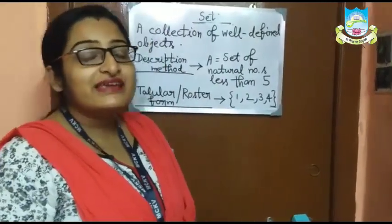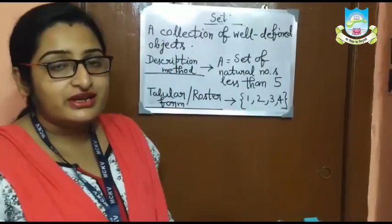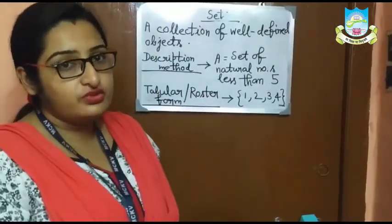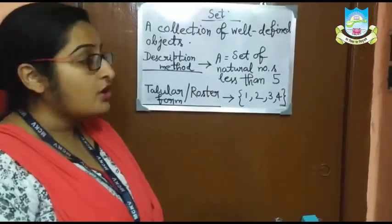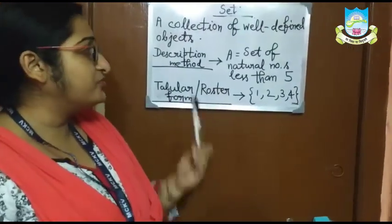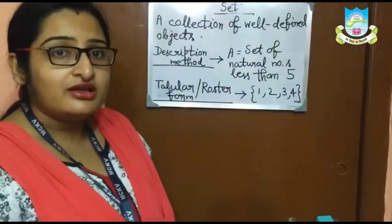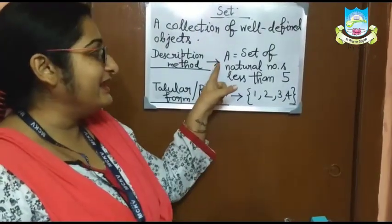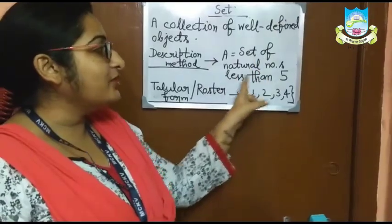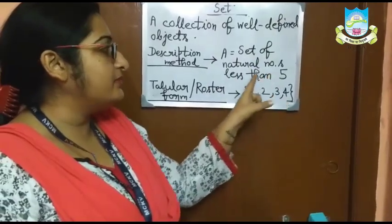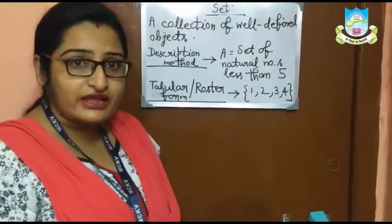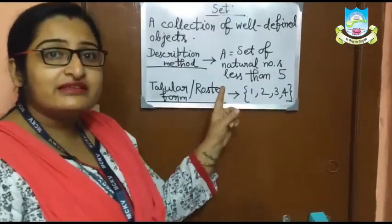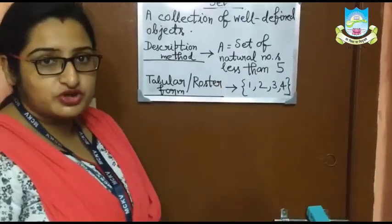A set can be written in three different ways. The first one is the description method. For example, set A is a set of natural numbers less than 5. This is the description method.